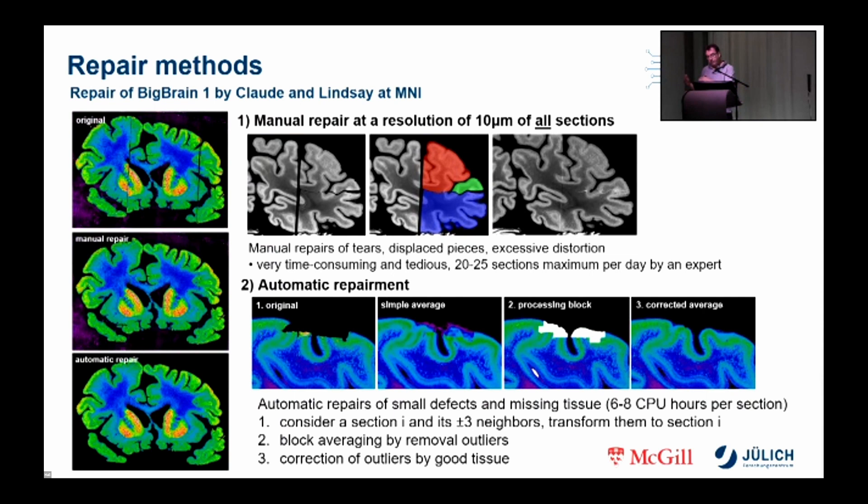In the second step, the three nearest neighboring sections are non-linearly transformed and used to automatically repair small defects and missing tissue. An average is taken to compute the variance and detect outliers, which are then replaced by the best tissue on a per-block basis. However, the detection of outliers is sometimes too noisy and needs to be replaced by a user-painted mask.